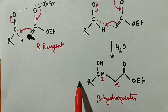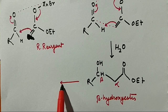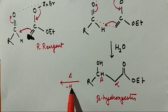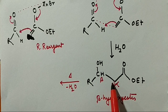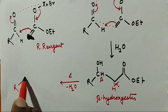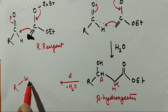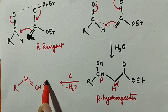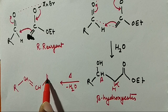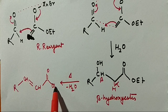When this beta-hydroxyester is heated, it undergoes dehydration. H₂O is removed: one H is removed from the alpha carbon and OH is removed from the beta carbon, and a double bond is formed. So we get RCH=CH–C(=O)OEt, which is the alpha-beta unsaturated ester.